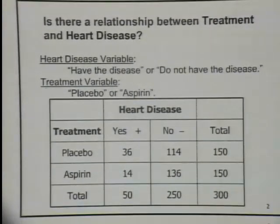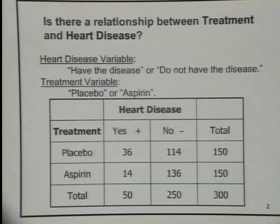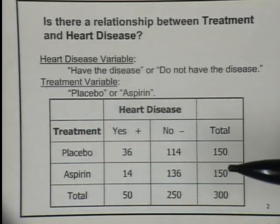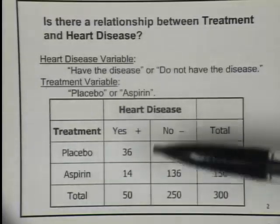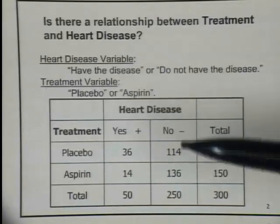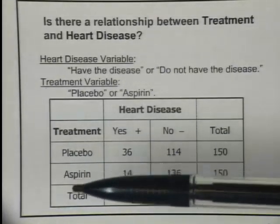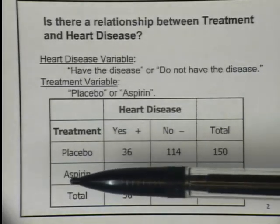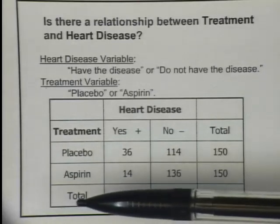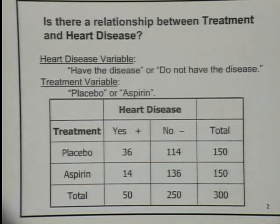This is an example for studying correlation between two categorical variables. This kind of study was done a lot in the 80s — people tried to understand whether aspirin can help prevent heart disease. It's a blood thinner. The study involved 300 people: 150 used placebo and 150 used aspirin. After a period of time, 50 of them had heart disease and 250 had no heart disease. In the placebo group, 36 out of 150 had heart disease; in the aspirin group, 14 out of 150. It seems like the placebo group had a higher rate of heart disease — but does it just happen by coincidence, or is there really something going on?